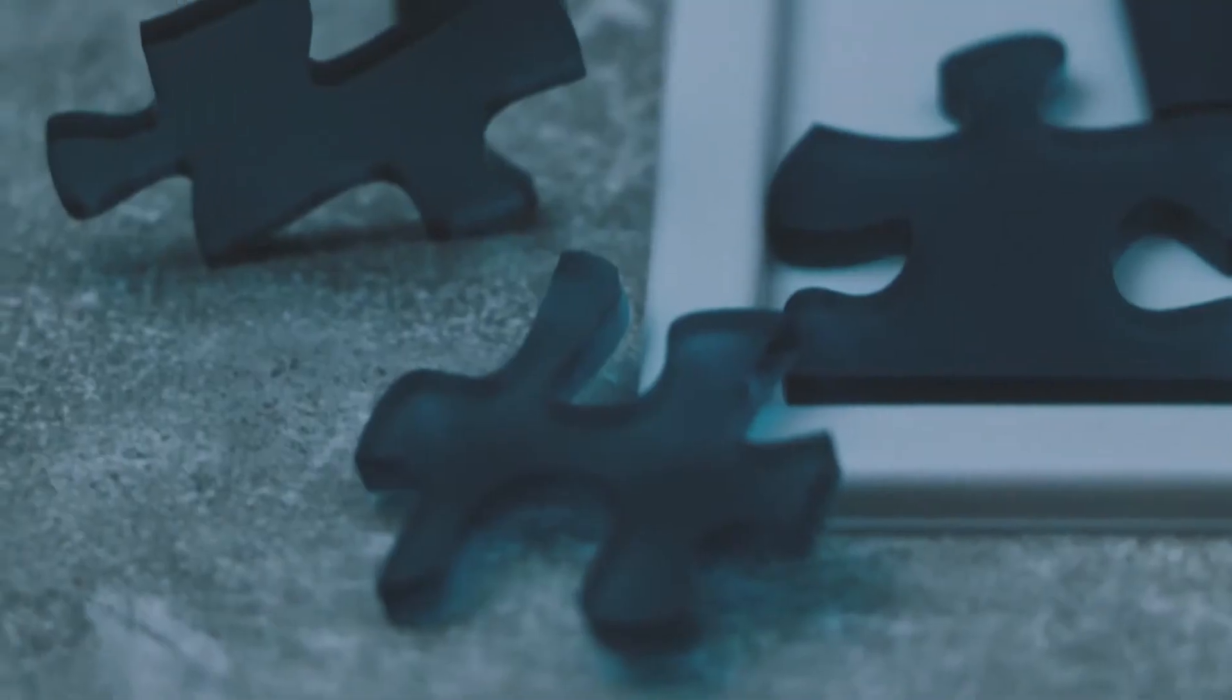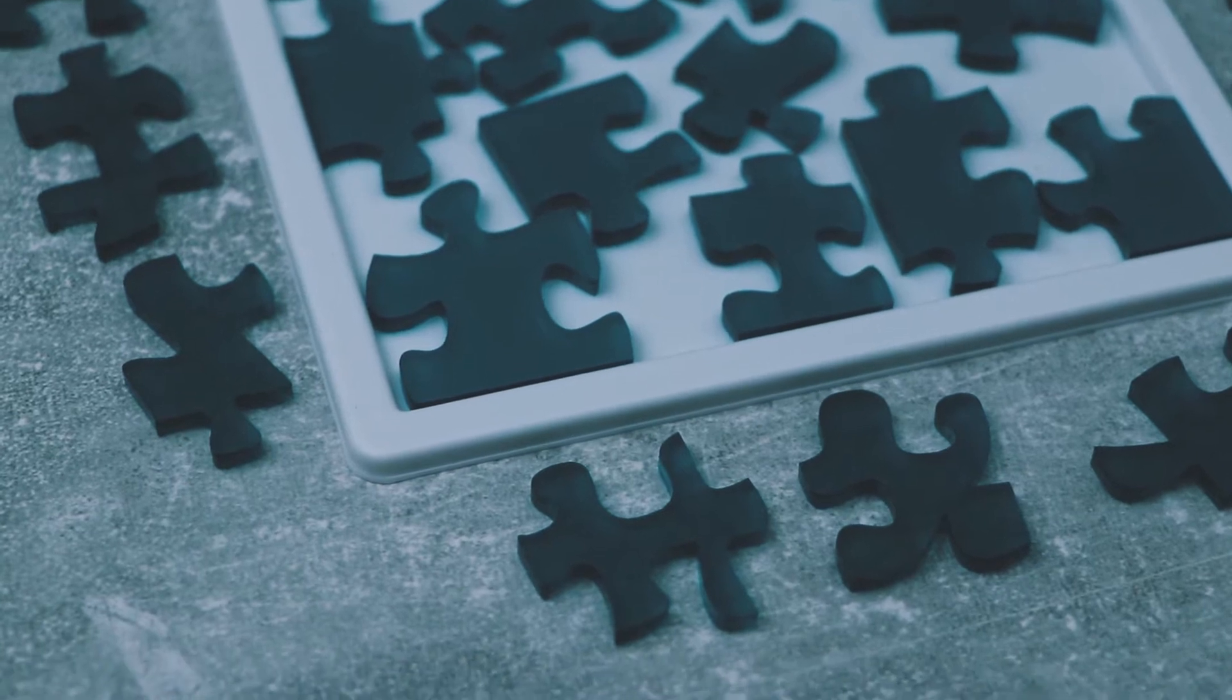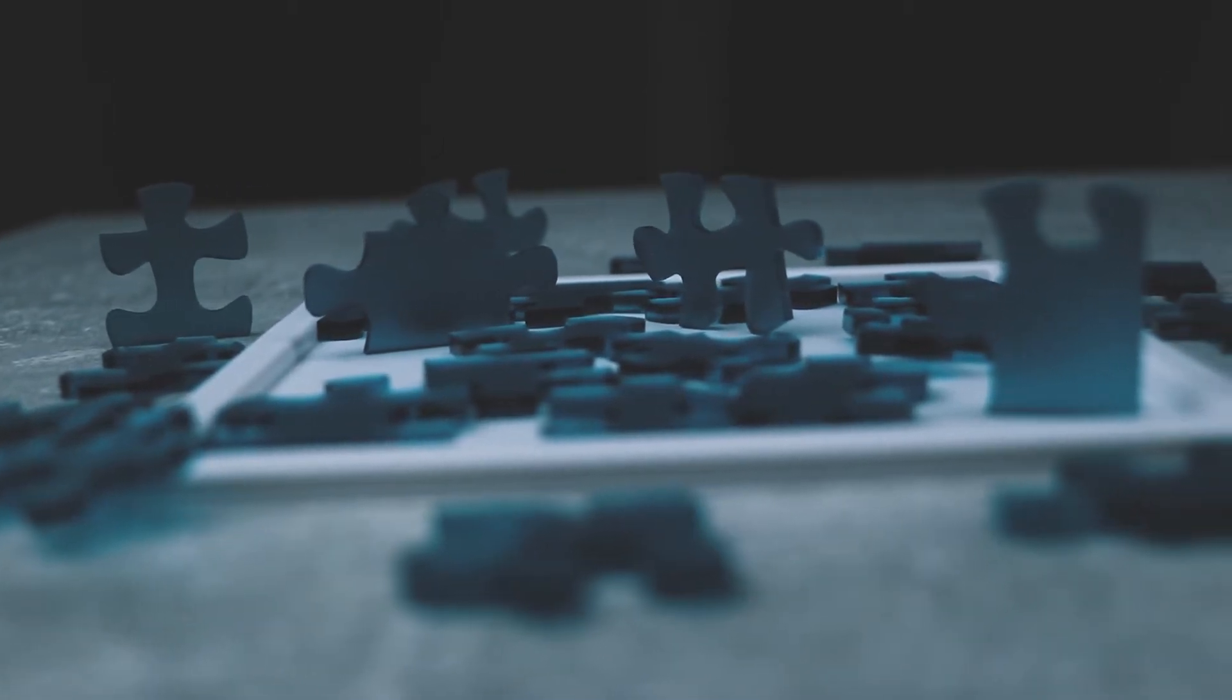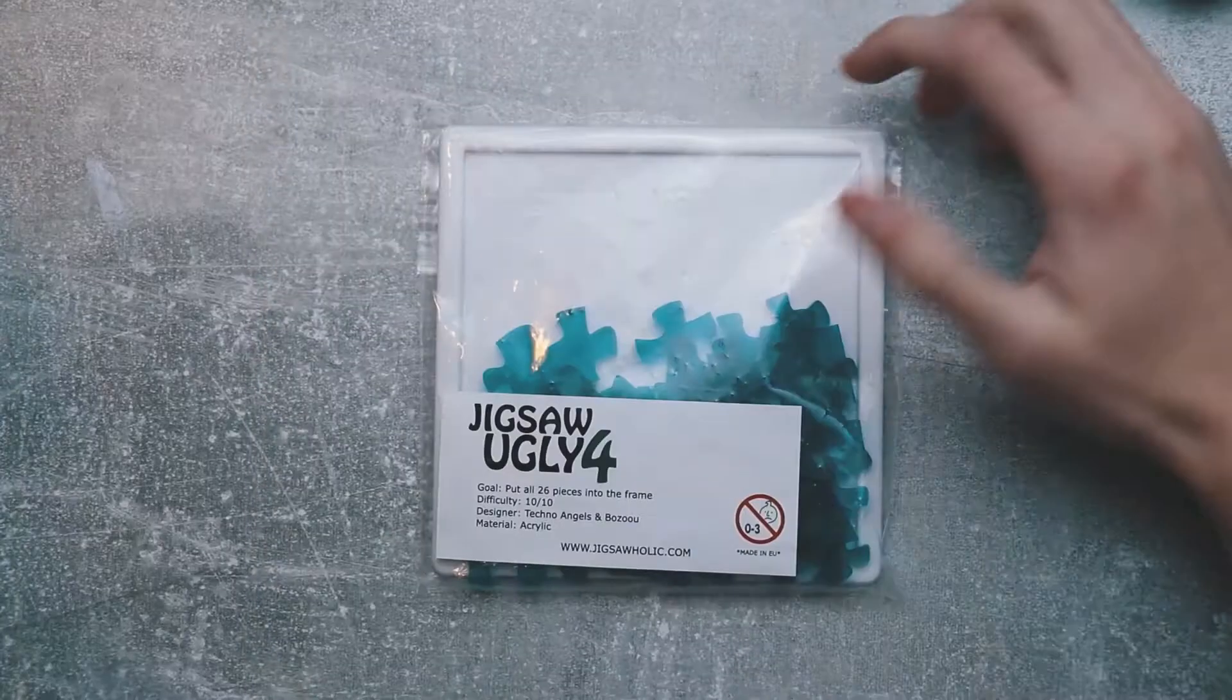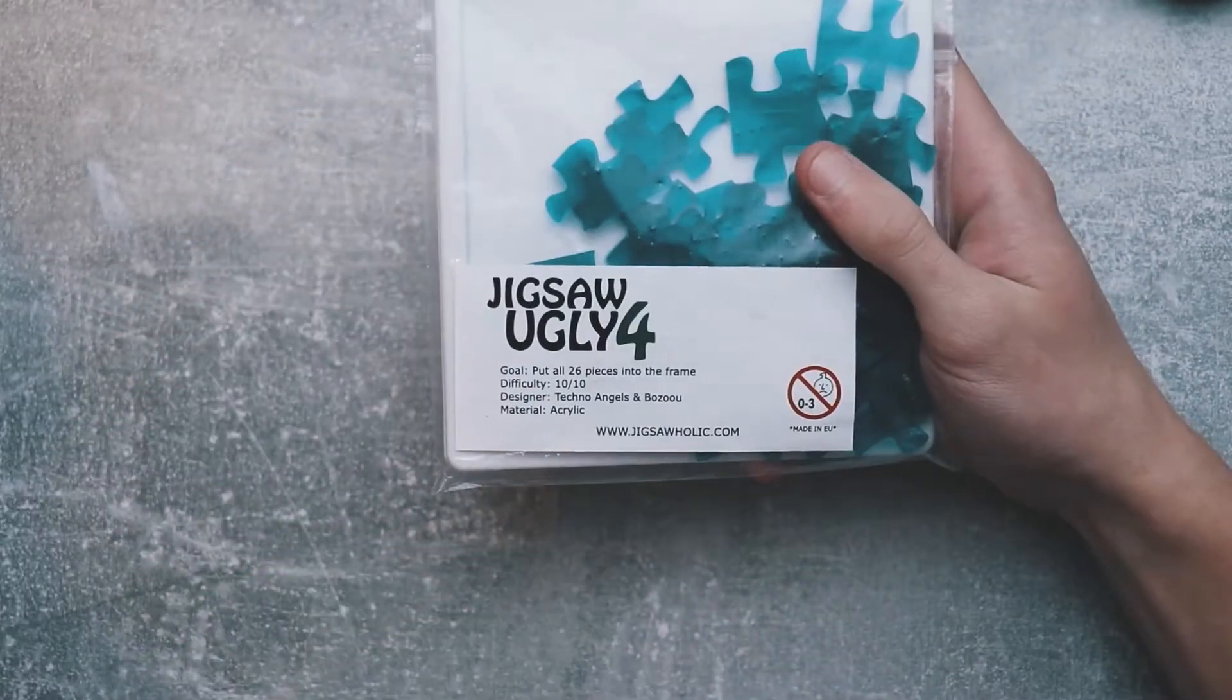This puzzle is made by Jigsaholic, which is Techno Angels and Bozo. They are from Croatia. If you'd like to get this puzzle yourself, you can click the link in the description and get 10% off the entire store of Jigsaholic. Without any further ado, let's start solving the Ugly Four puzzle. This is a puzzle I wanted to solve for a very long time. 10 out of 10 difficulty.